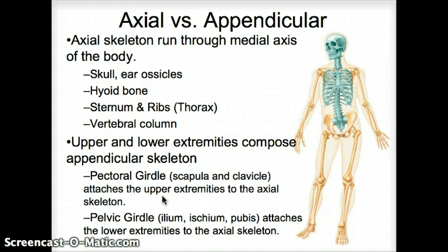The upper arm bone — the humerus — and the forearm bones — the radius and the ulna — are all appendicular skeletal. So are the wrist, the hand, and the fingers.